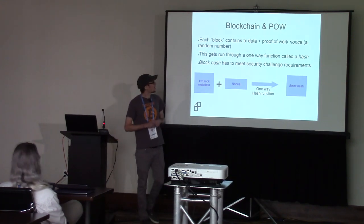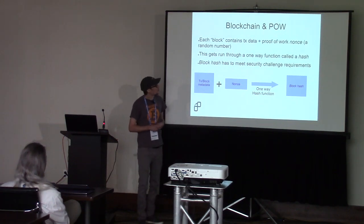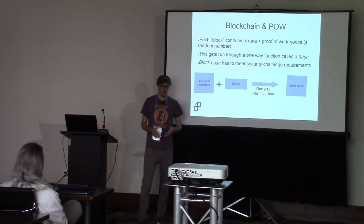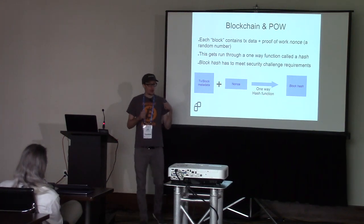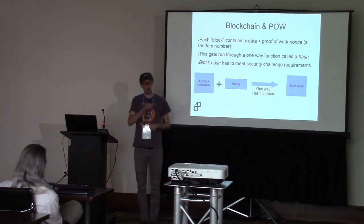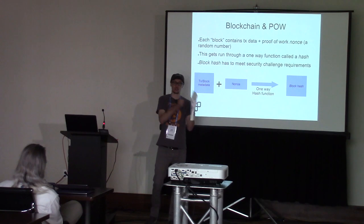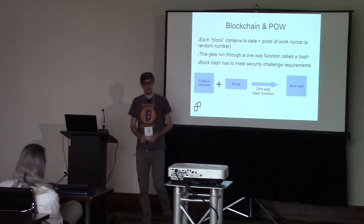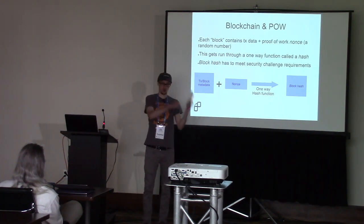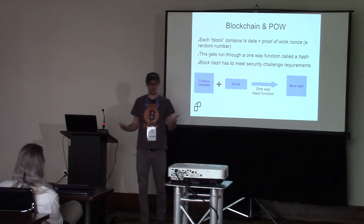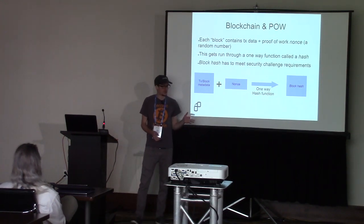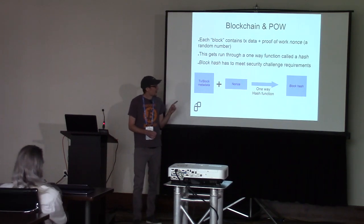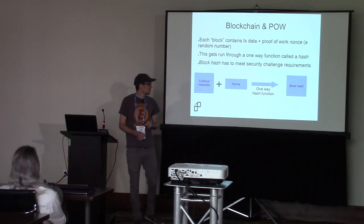Each Bitcoin block contains transaction data and metadata including a proof of work nonce, which is essentially a random number. This gets run through a one-way function called a cryptographic hash function. When you run data through a hash function, it's only one way — you get a hash value output and cannot go backwards to the original data. The block header data and the nonce get run through this one-way cryptographic hash, and the resulting hash must meet certain requirements.